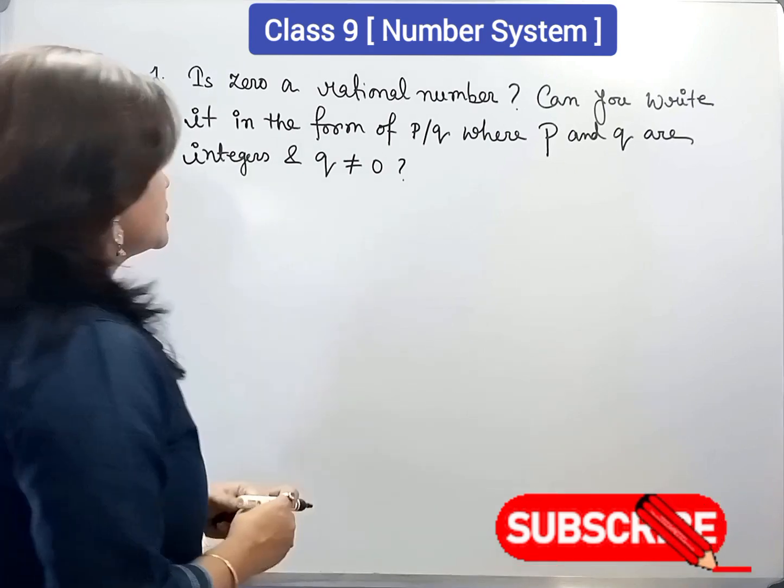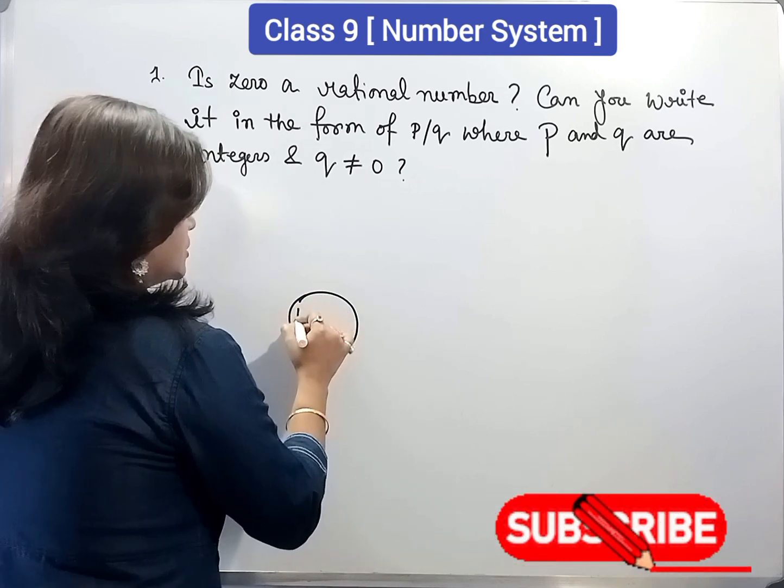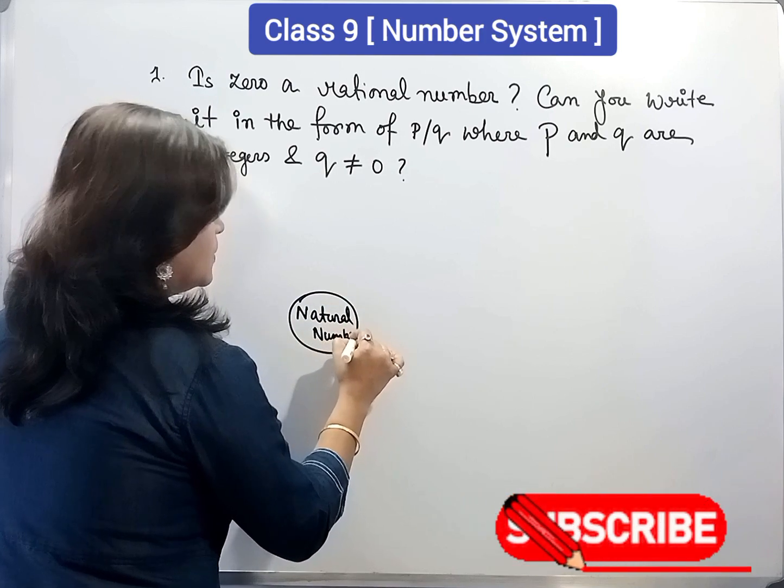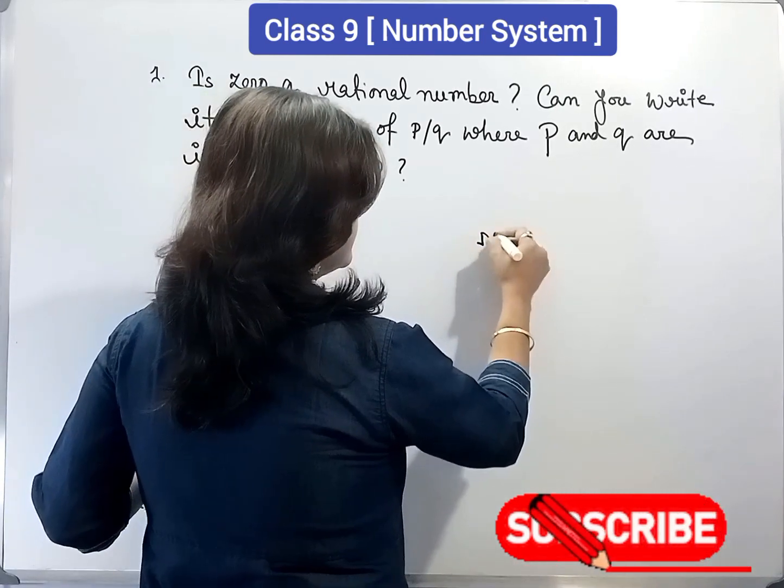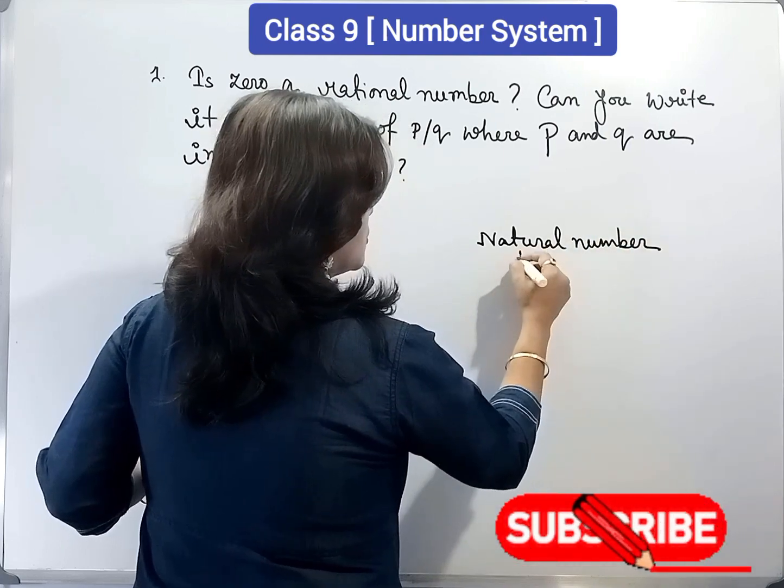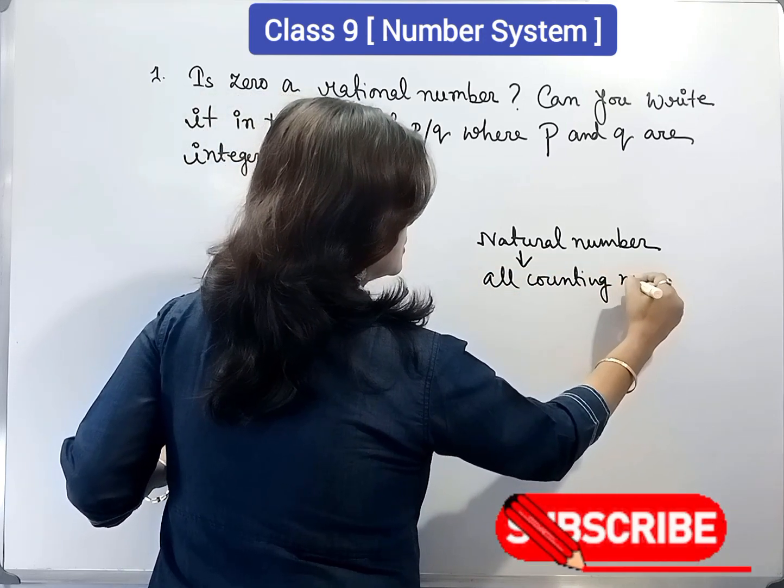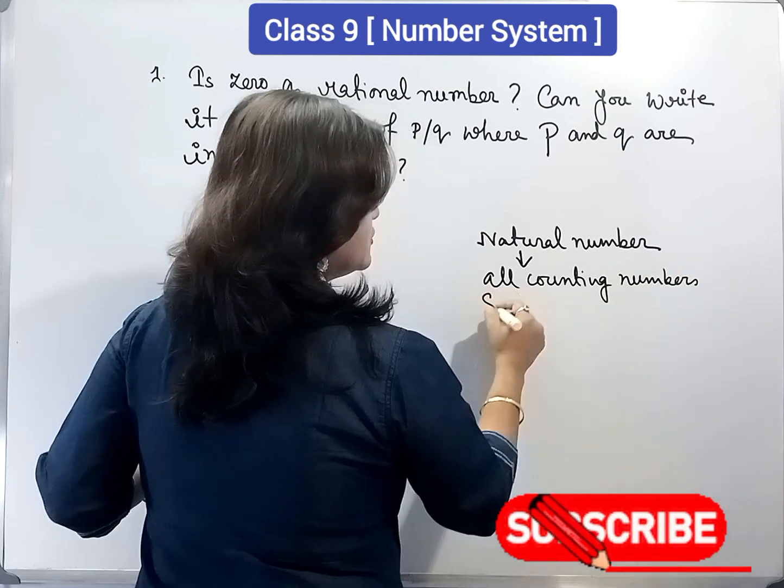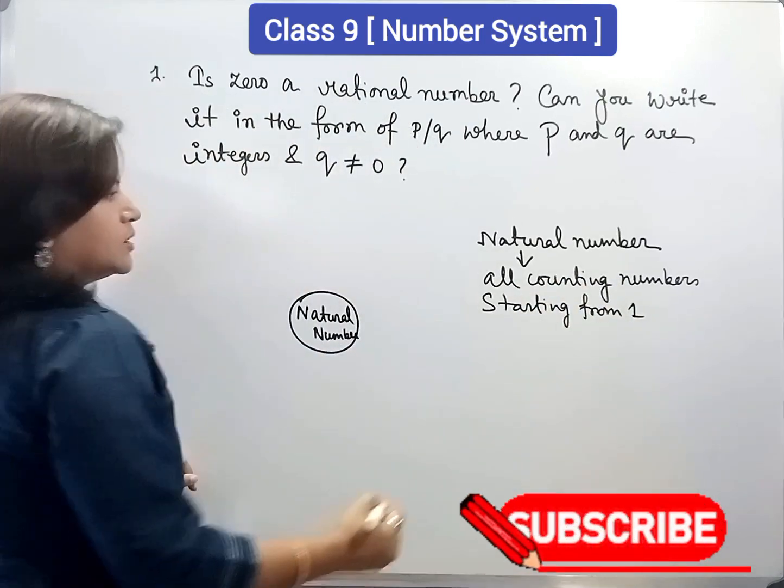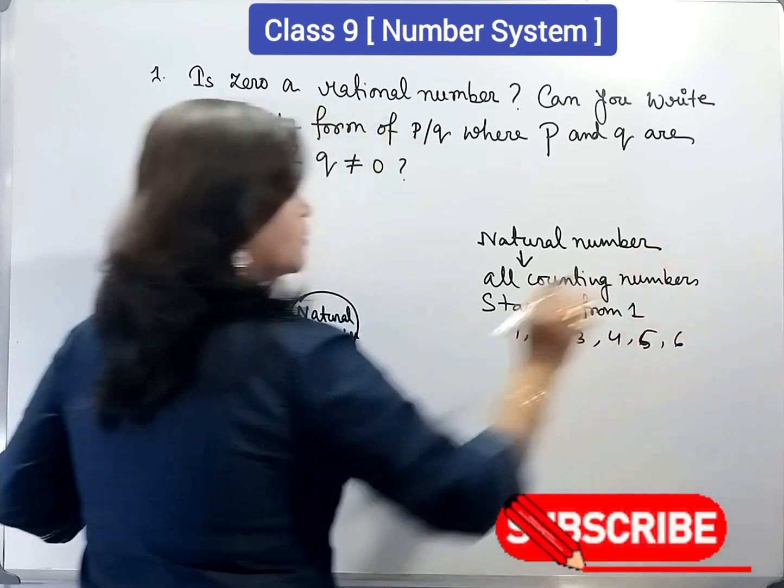To understand this, first I will show you a Venn diagram. First, natural number. What is natural number? You know that natural numbers are all counting numbers starting from 1. Now, 1, 2, 3, 4, 5, 6, so on. All these are natural numbers.